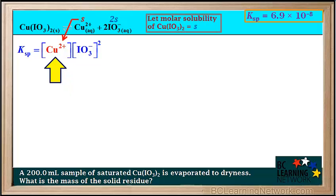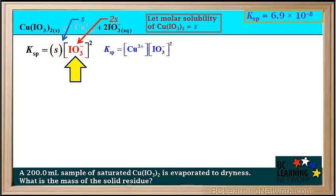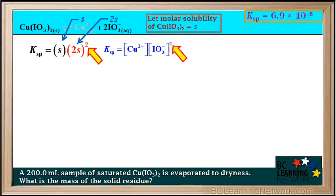The concentration of Cu²⁺ is equal to S, so we substitute S in for the concentration of Cu²⁺. The concentration of IO₃⁻ is equal to 2S, so we substitute 2S in for the concentration of iodate in the Ksp expression. Keep in mind, the concentration of IO₃⁻ in the Ksp expression is squared, and the concentration of IO₃⁻ is 2S, so the 2S is all squared.